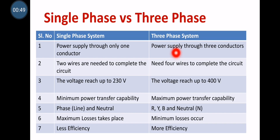In star connection, neutral point is present, whereas in delta connection, neutral point is not there. But in a single-phase connection, ultimately there is only one type of connection — starting from phase and terminating to neutral.